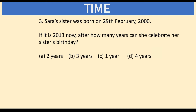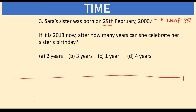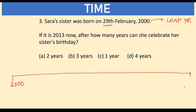Next question: Sarah's sister was born on 29th February 2000. If it is 2013 now, after how many years can she celebrate her sister's birthday? 29th February 2000 means 2000 is a leap year. To celebrate this birthday, it must fall on a leap year, which comes once every 4 years. So: 2000, then 2004, then 2008, then 2012, and we are at 2013.